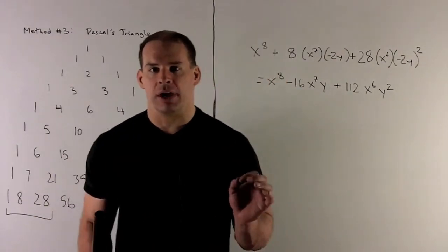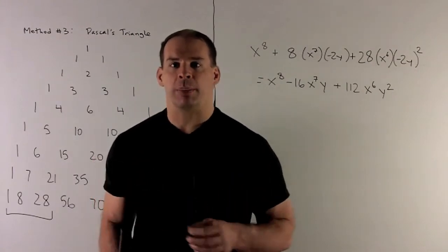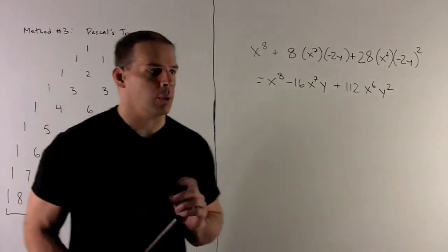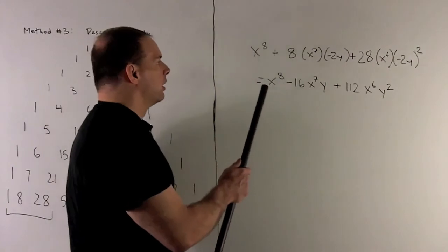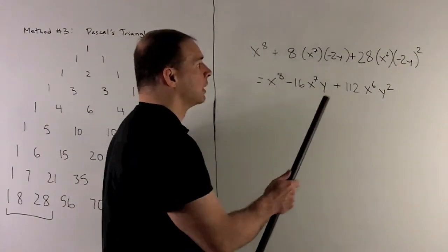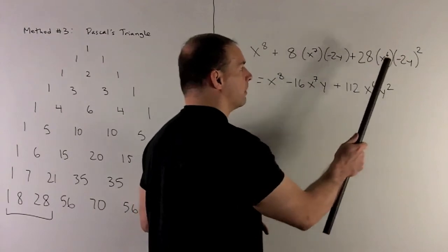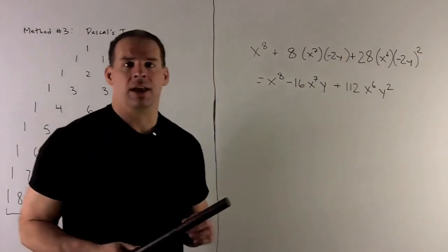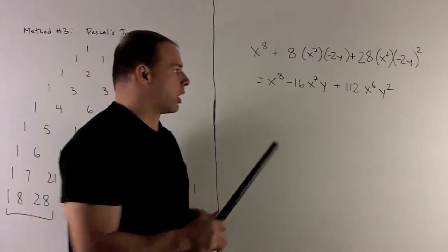And then, we just apply binomial theorem with these numbers in for your binomial coefficients. So, we would have x^8 + 8 times x^7 times (-2y) + 28x^6 times (-2y)^2. And then, that gets us to the answer that we've already seen.